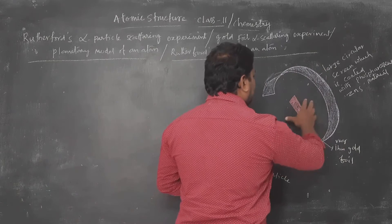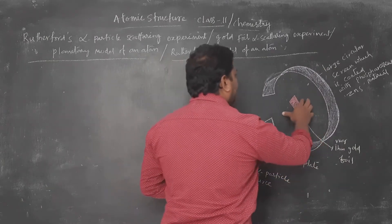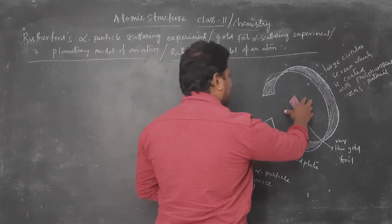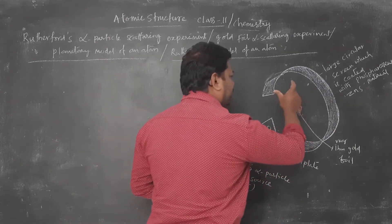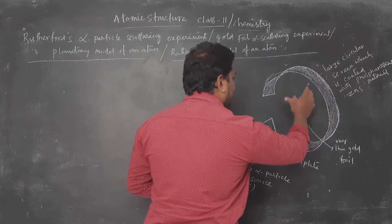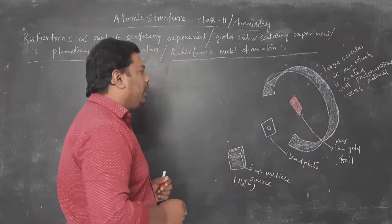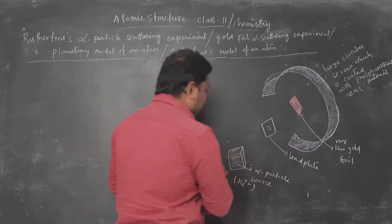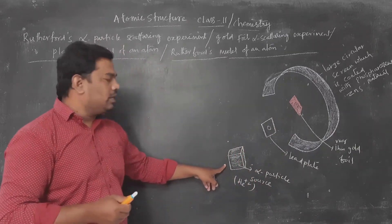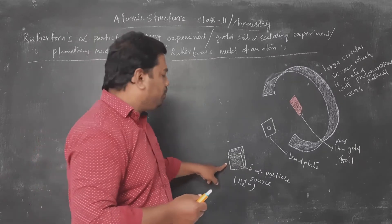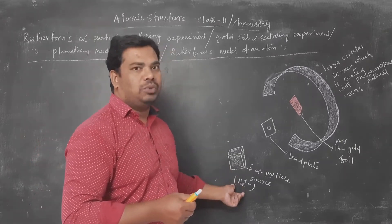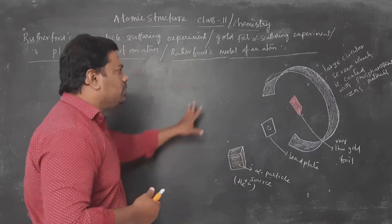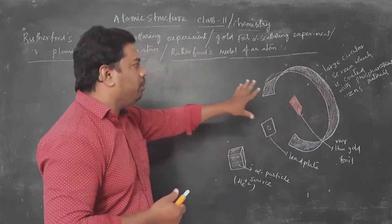Inside this large circular screen, he kept a very thin gold foil — a very thin plate used for this experiment. There is also a lead plate, and this is the source of alpha particles, which produces alpha particles represented as He²⁺. These are positively charged particles. That is the setup for the Rutherford experiment.